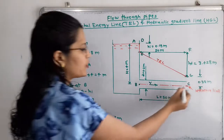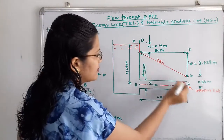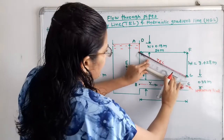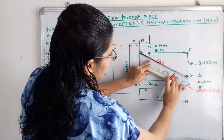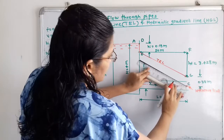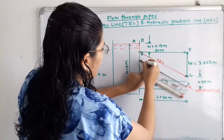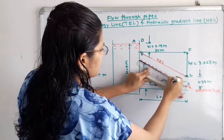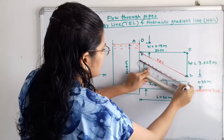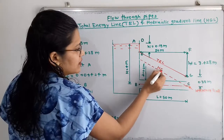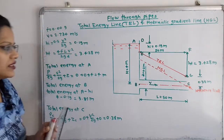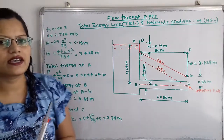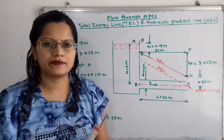From point C we draw a parallel line to the TEL, shown as a dashed line. This dashed line is the hydraulic gradient line, labeled HGL. In this way, the total energy line and hydraulic gradient line are constructed.